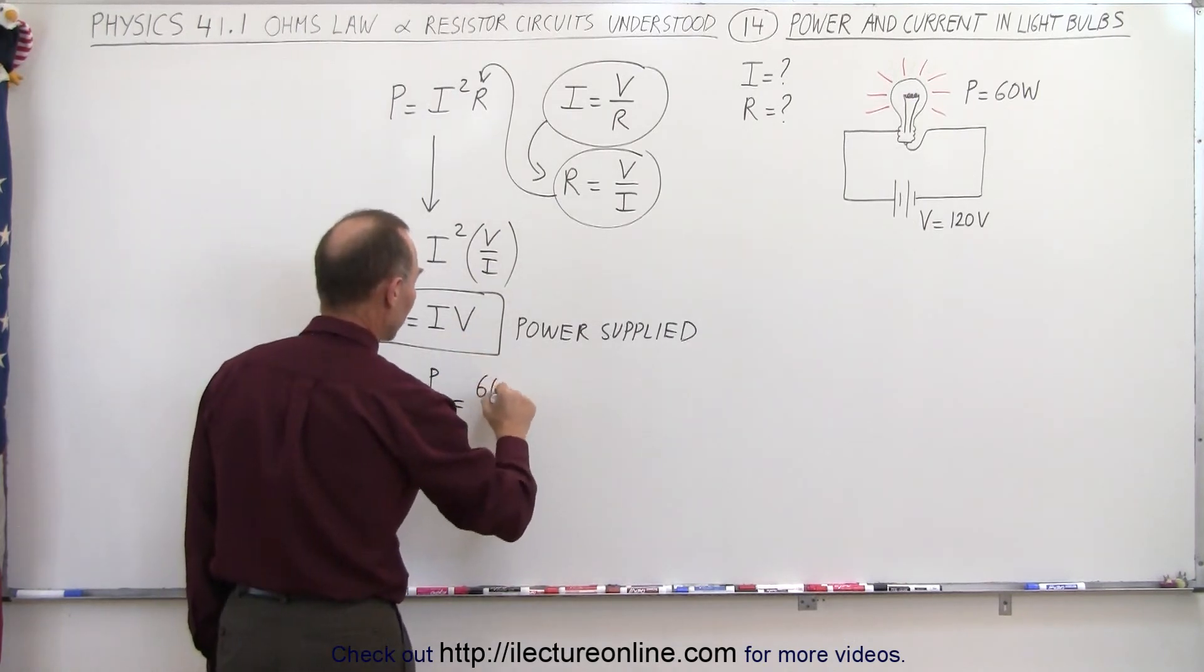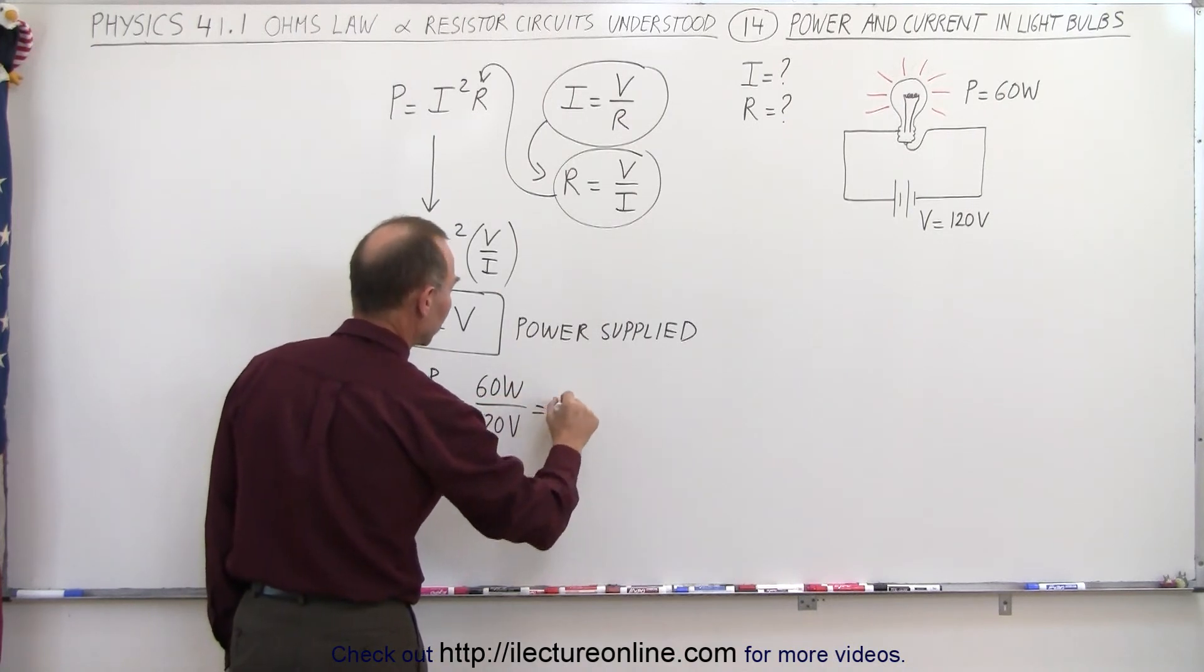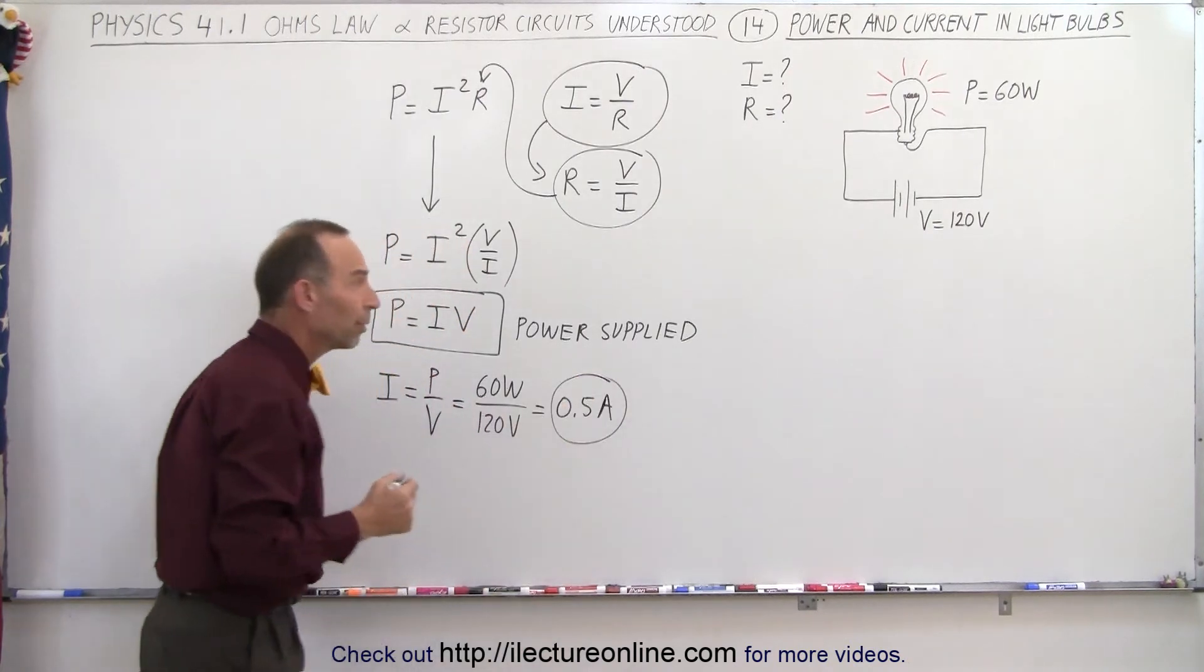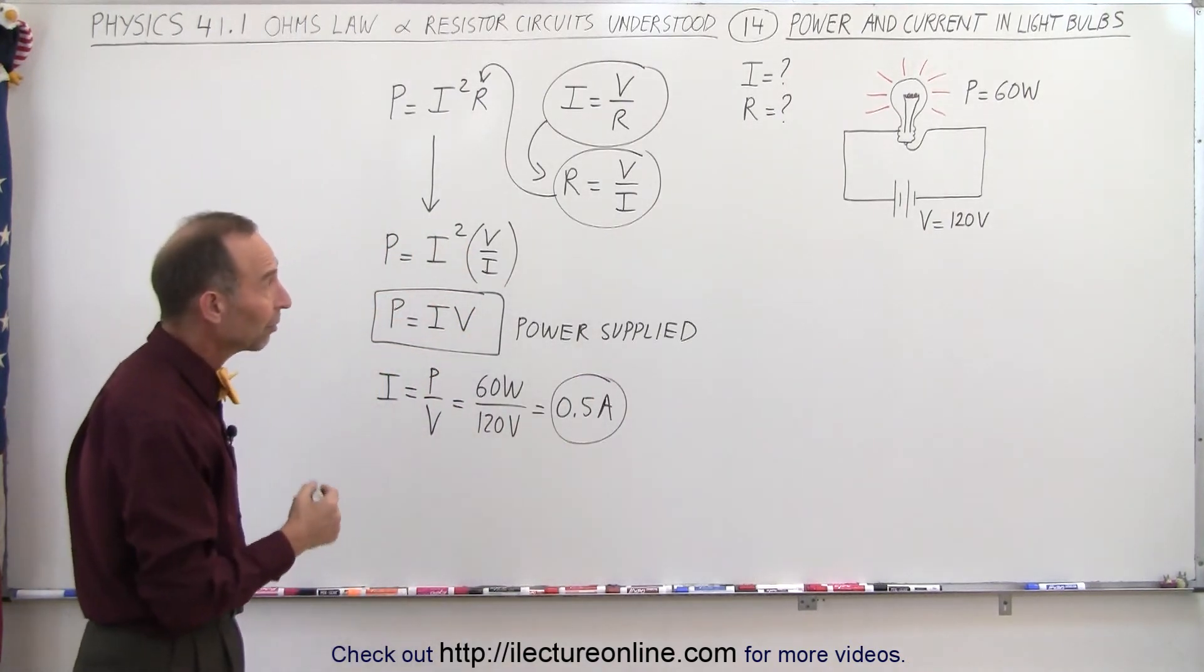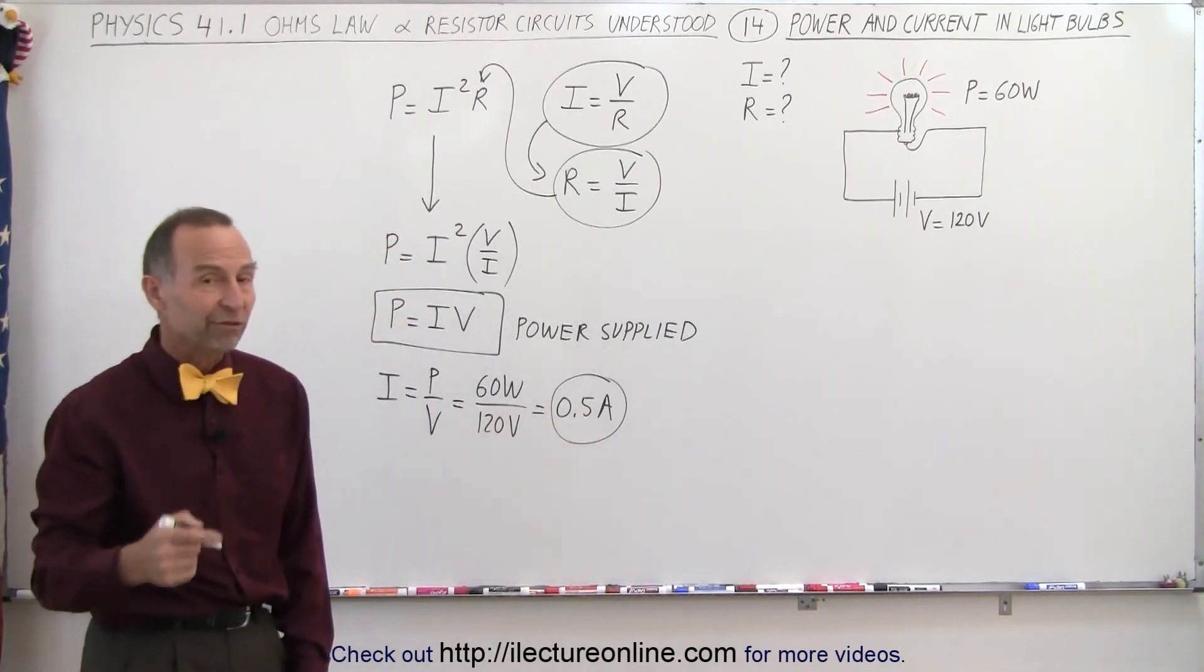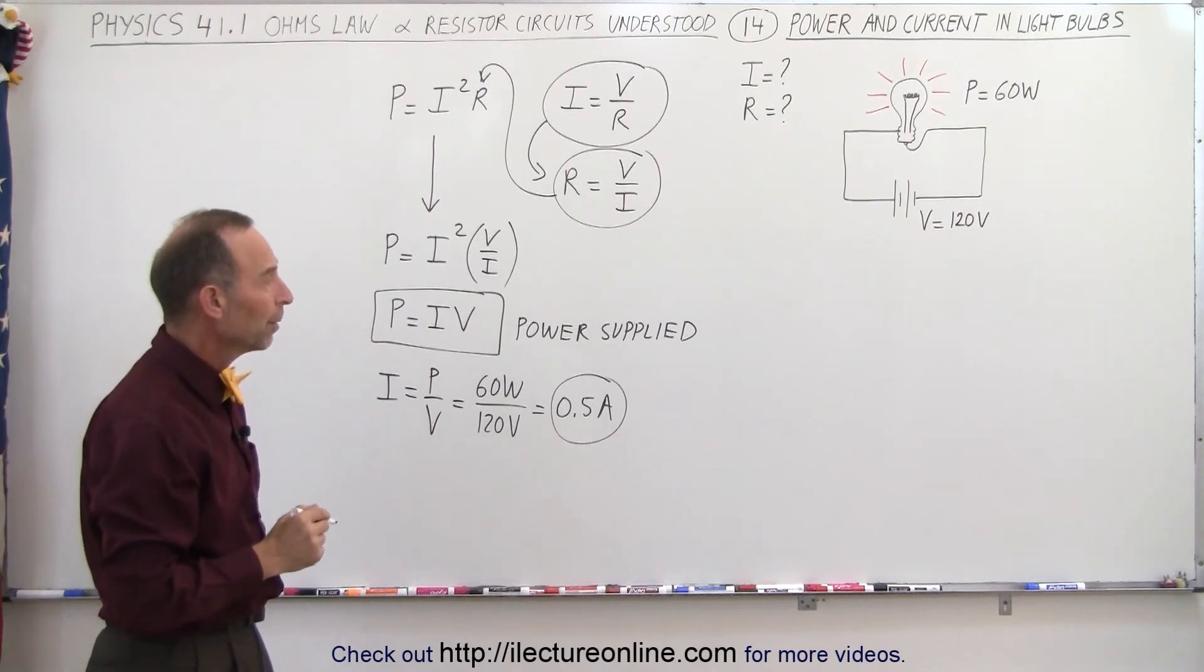In this case the power is 60 watts and the voltage is 120 volts, so that would be equal to 0.5 amps, which means that if you apply 120 volts to the light bulb that's rated at 60 watts it will carry a current of 0.5 amps. In other words, a current of 0.5 amps will be pushed through the light bulb.